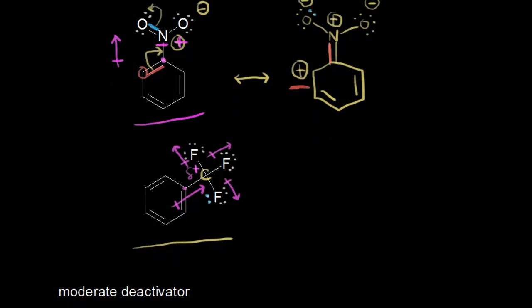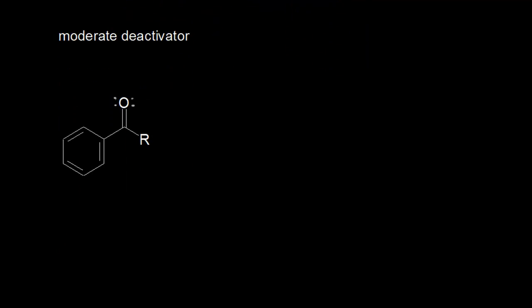Let's look at one more example of a meta-director, and this one is a moderate deactivator. If we look at the atom directly bonded to the ring, it is double bonded to an oxygen. Oxygen is much more electronegative than this carbon, so we can think of this oxygen as being partially negative, pulling some electron density toward it and withdrawing electron density away from this carbon, giving this carbon a partial positive charge. So once again, you have a partial positive next to the ring, which makes this group a meta-director.